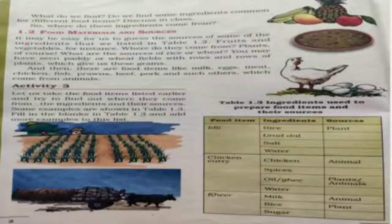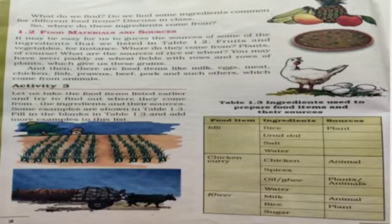The second point is food materials and sources. Some materials like fruits and vegetables we quite obviously get from plants only. Some more things like rice or wheat are also obtained from plants — from wheat fields or paddy fields.